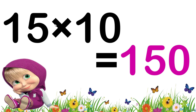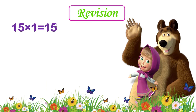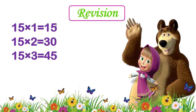Now children, let's revise the table once again. 15 ones are 15. 15 twos are 30. 15 threes are 45.